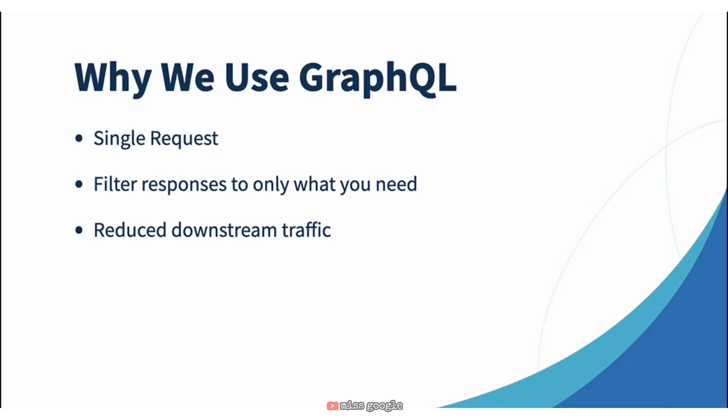With GraphQL we don't need to do that. We can leverage the graph nature and pull back all sub-resources of a parent resource, a single sub-resource, or just fields within that resource. Add that into filtering and we start to get a real picture of what we want, what we can return, and how we do it. Another advantage, especially in the front-end world, is that we don't need multiple endpoints configured. In a REST world we often need base URLs for each service. With GraphQL we only need the URL of the GraphQL server.